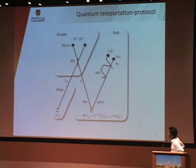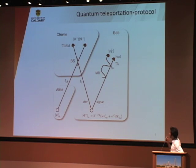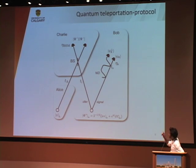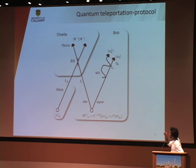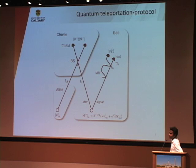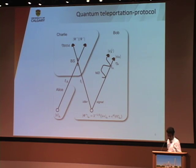This is how the basic teleportation protocol looks like. We have Alice, Bob, and Charlie. Alice prepares the qubit that needs to be teleported, and Bob prepares one of the four Bell states — idler and signal. Alice sends the prepared qubit and Bob sends one of his entangled states to Charlie, who performs the Bell state measurement. Conditioned on this measurement, Alice's qubit state is teleported onto Bob, modulo some unitary transformation. Bob then performs the necessary unitary to recover Alice's qubit state.